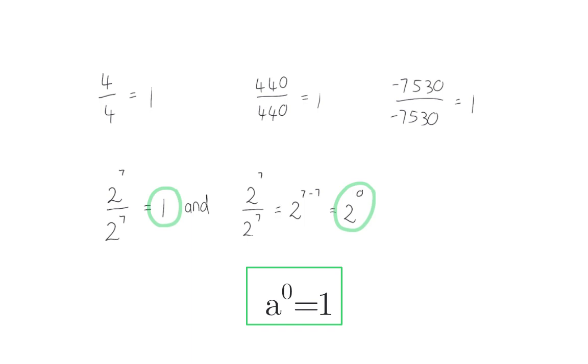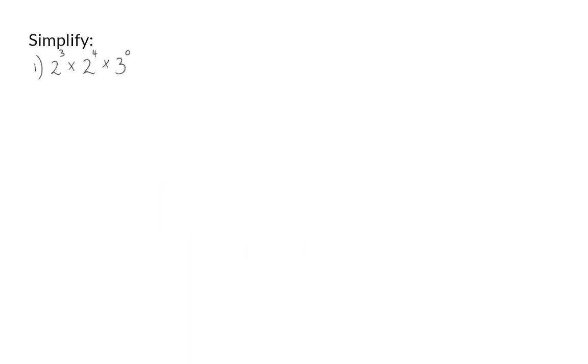Let's have a look at how this will form part of calculations. In the first example, we have two different bases. We can use our first exponential law to simplify the bases that are the same. So we will keep the first base at 2 and add the exponents to get an exponent of 7.